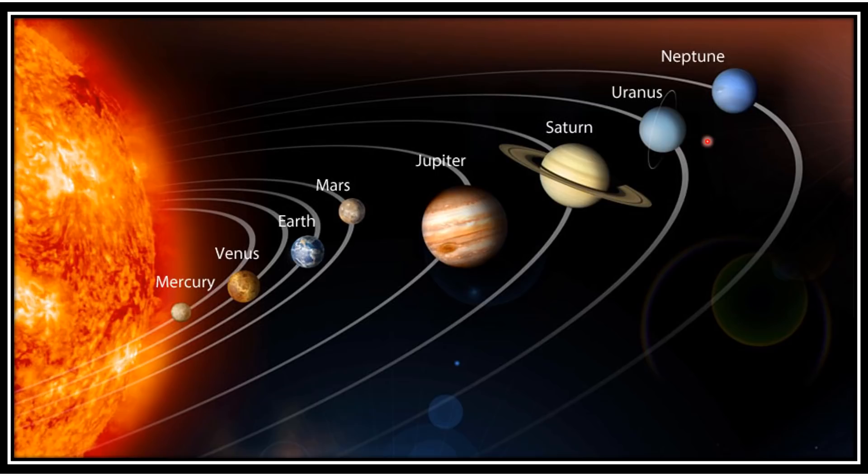Uranus - like Venus, Uranus also rotates from east to west. It has highly tilted rotational axis. So in its orbital motion, Uranus appears to roll on its side. Neptune - it is the outermost planet of the solar system. It has two moons.